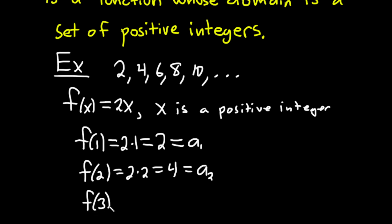F of 3, let's keep going. Why not? This is 2 times 3, which is 6. This would be A sub 3.